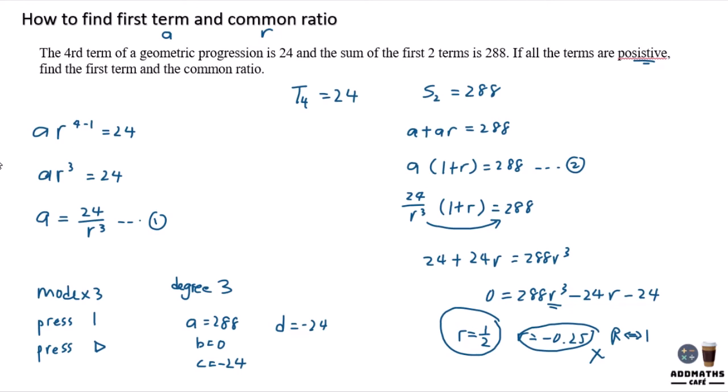Since after that, you find your R. Find your A from the first equation here, equal to 24 divided by (1/2)^3. So in this case, your A will be 192.